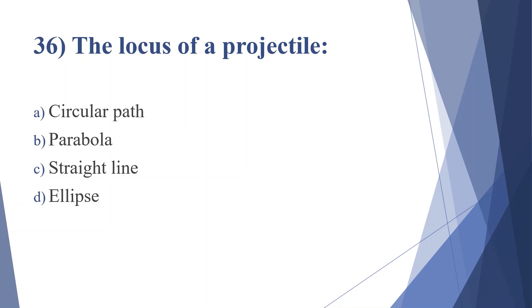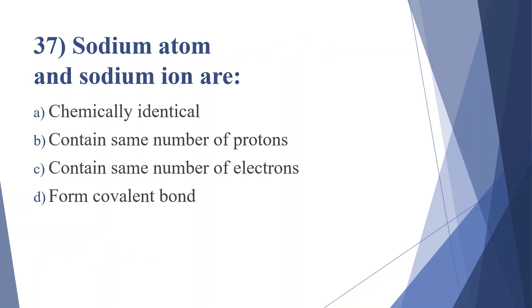Thirty-sixth question: the locus of a projectile — option A: circular path, option B: parabola, option C: straight line, option D: ellipse. Answer is option B, parabola.